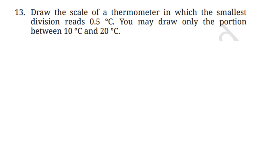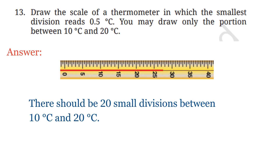Question 13: Draw the scale of a thermometer in which the smallest division reads 0.5°C. You may draw only the portion between 10°C and 20°C. There should be 20 small divisions between 10°C and 20°C.